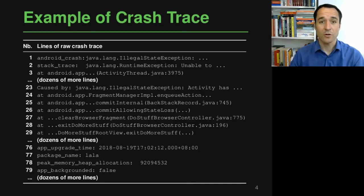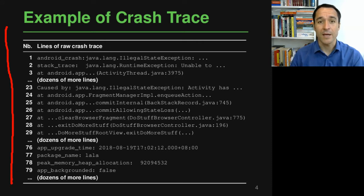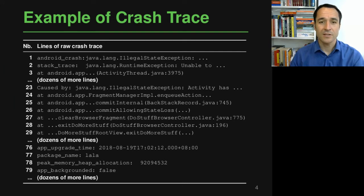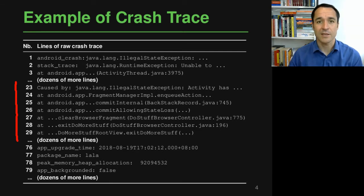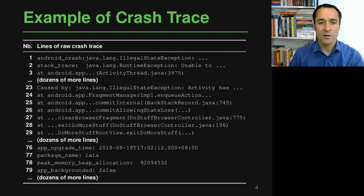To make things more concrete, let's have a look at two examples of these raw crash traces. What you see here is a crash trace produced by an Android application. It's pretty long, containing multiple dozens, sometimes hundreds of lines of text, and it contains different kinds of information. For example, somewhere in this crash trace we will have a stack trace or maybe even multiple stack traces, because one exception may trigger another. We also have a lot of other information, for example about the application that has crashed or maybe the system on which this crash has happened.